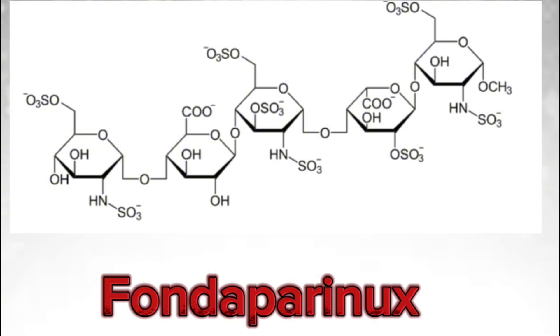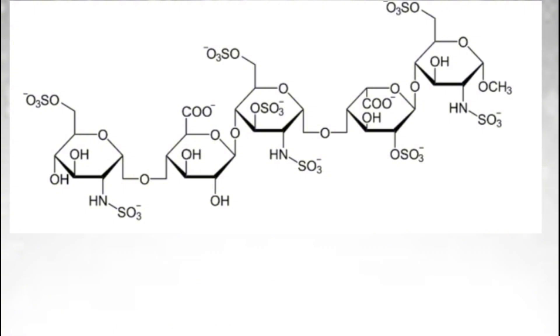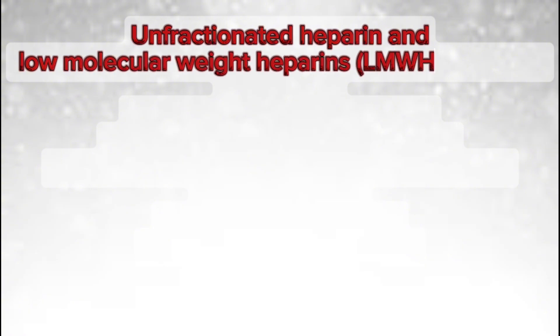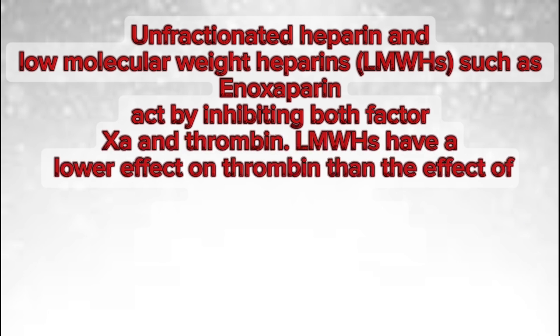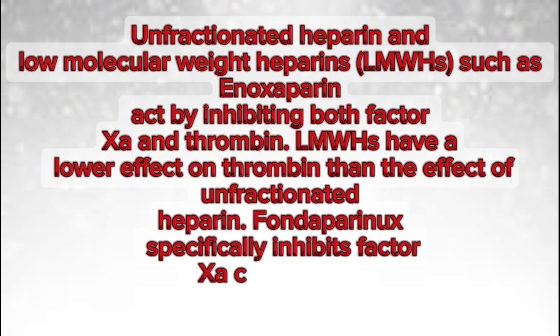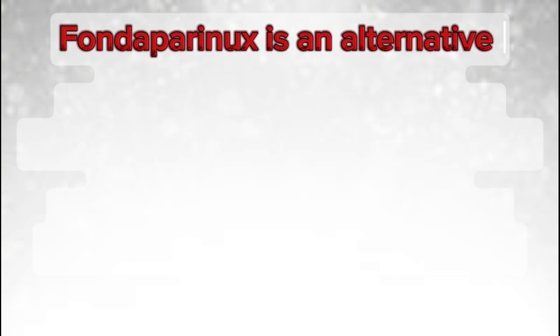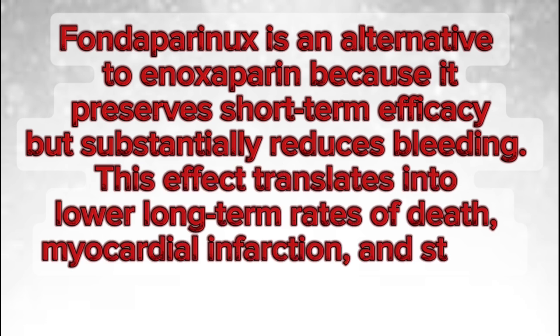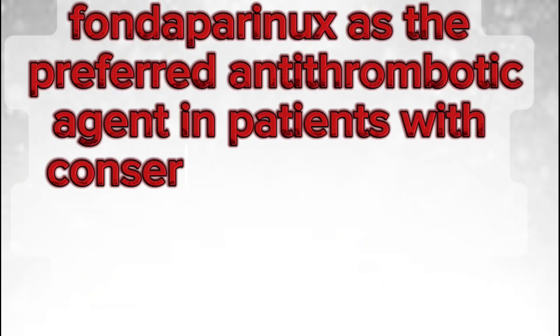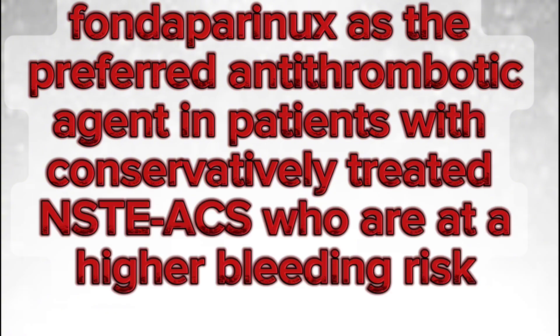Fondaparinux versus enoxaparin: unfractionated heparin and low molecular weight heparins (LMWHs) such as enoxaparin act by inhibiting both factor Xa and thrombin. LMWHs have a lower effect on thrombin than unfractionated heparin. Fondaparinux specifically inhibits factor Xa. Fondaparinux is an alternative to enoxaparin because it preserves short-term efficacy but substantially reduces bleeding, translating into lower long-term rates of death, myocardial infarction, and stroke. Fondaparinux is the preferred antithrombotic agent in patients with conservatively treated NSTEACs who are at higher bleeding risk.